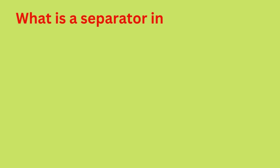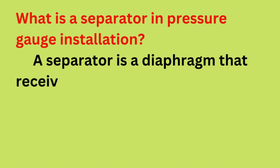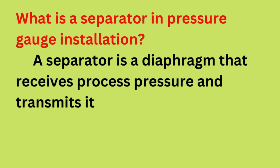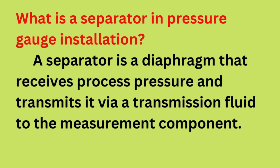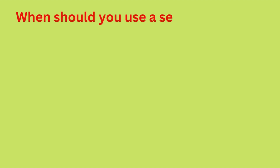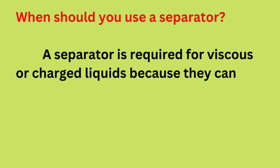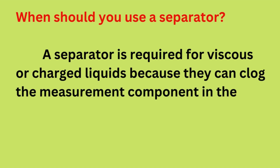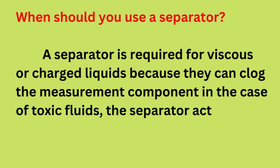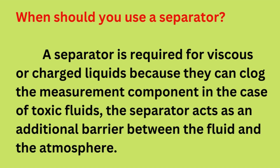What is a separator in pressure gauge installation? A separator is a diaphragm that receives process pressure and transmits it via a transmission fluid to the measurement component. A separator is required for viscous or charged liquids because they can clog the measurement component. In the case of toxic fluids, the separator also acts as an additional barrier between the fluid and the atmosphere.